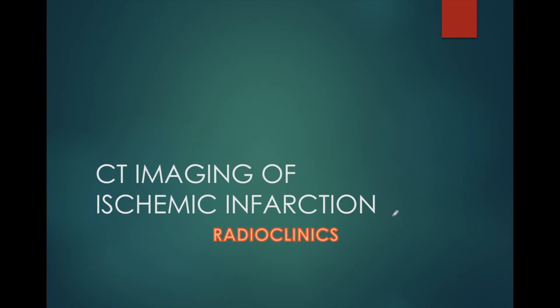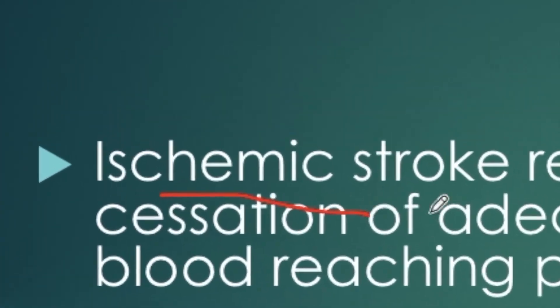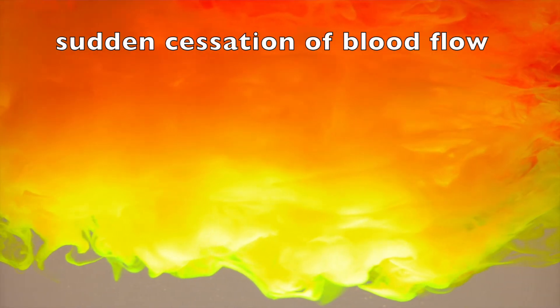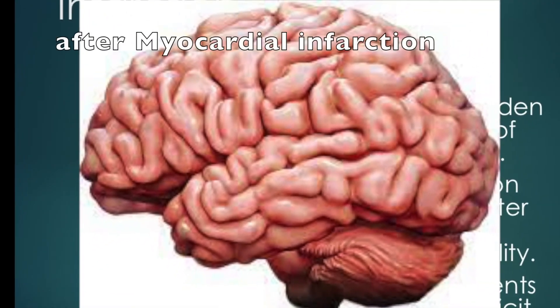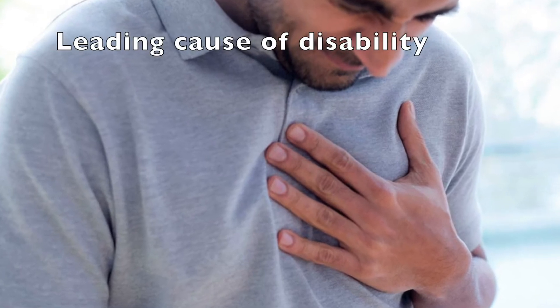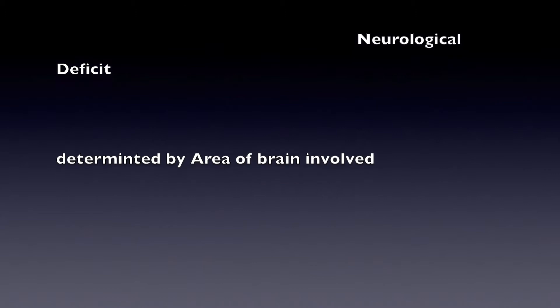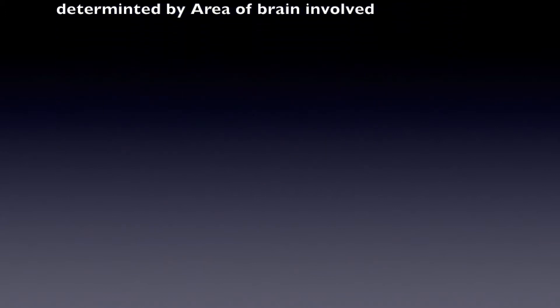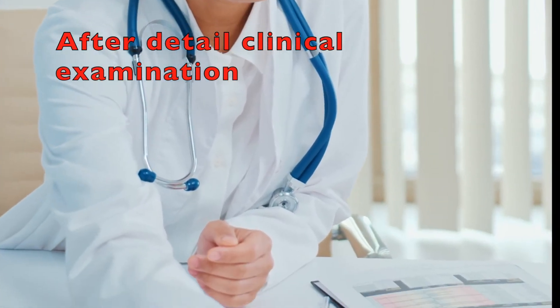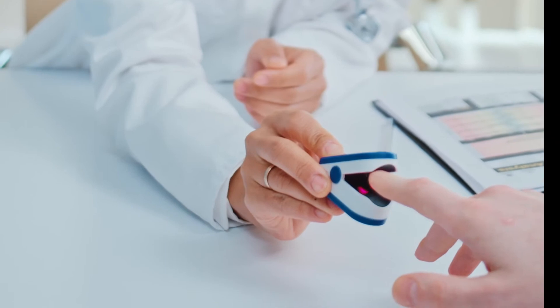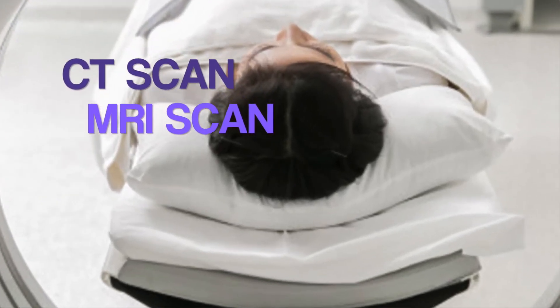Welcome to Radio Clinics. Today's topic is CT imaging of ischemic infarction. Ischemic stroke results from a sudden cessation of adequate blood reaching parts of the brain. Stroke is the second most common cause of morbidity worldwide after myocardial infarction and the leading cause of acquired disability. An ischemic stroke typically presents with rapid onset neurological deficit, which is determined by the area of the brain involved. After detailed clinical examination, the first investigation in acute stroke is usually a CT scan or an MRI scan.